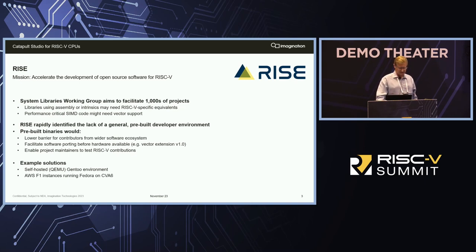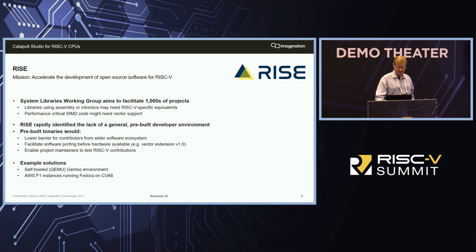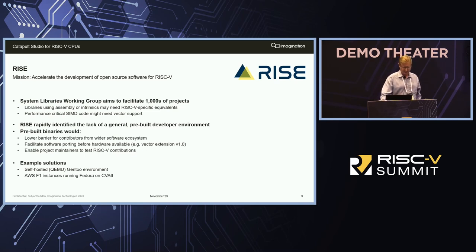Fairly early on, RISE identified that there's a lack of general pre-built developer environments out there, which is fairly significant. They noted that pre-built binaries would lower that barrier for contributors from the wider software ecosystem — people who don't necessarily have a vested RISC-V interest, but nonetheless would like to try and support the new ISA. It would also help facilitate software porting before hardware is available, and we've seen that particularly with the Vector extension version 1.0. There's a bit of hardware trickling out now, but there's always going to be a new extension coming down the pipe from RISC-V that doesn't necessarily have a hardware implementation at the time you want to build software for it.